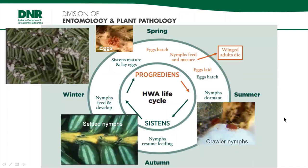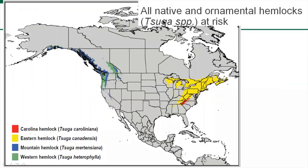In its native areas, the life cycle of hemlock woolly adelgid is complex, involving both hemlock and spruce trees. In the spring, eggs hatch and nymphs feed and mature. One generation is winged and leaves the hemlock in search of spruce trees. Once a spruce tree is found, the insects mate and lay eggs. In Asia, eggs hatch and feed on the spruce tree. In the eastern U.S., those winged adults die if any are present. The life stage most homeowners would likely notice is the white cottony egg sacs.